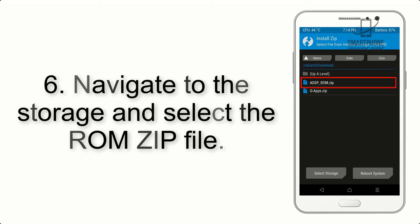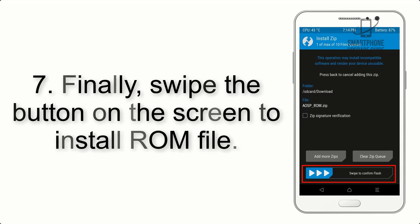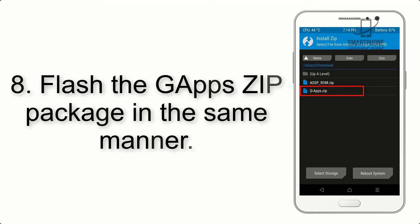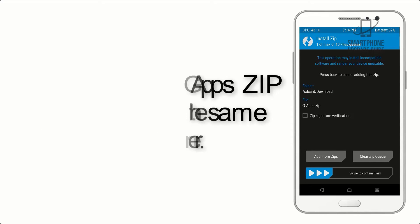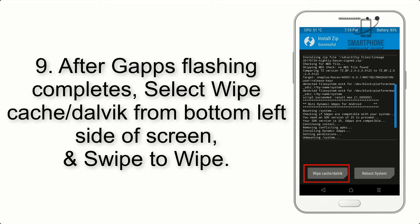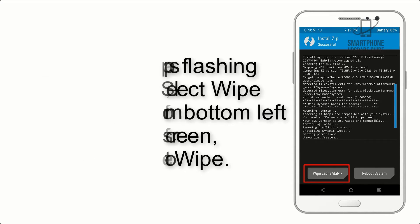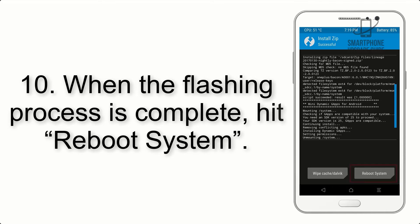Step 5: Go back to the recovery main screen and tap the Install button. Step 6: Navigate to storage and select the ROM zip file. Step 7: Swipe the button to install the ROM file. Step 8: Flash the GApps zip package in the same manner. Step 9: After GApps flashing completes, select Wipe Cache and Dalvik from the bottom left side of the screen and swipe to wipe.